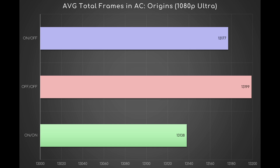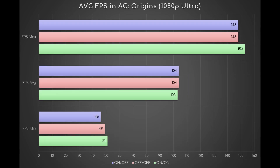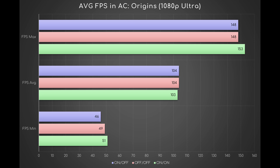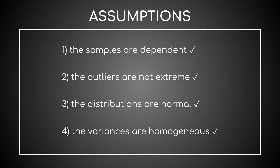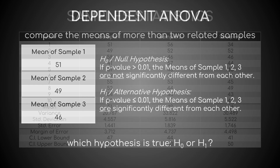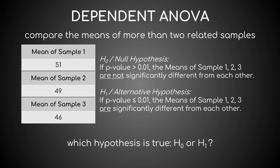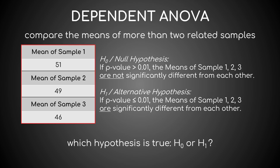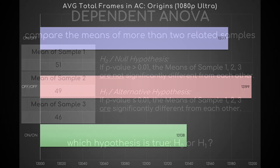One way to find out if these differences in total frames and mean FPS are statistically significant is the usual ANOVA. I've excluded the max and average FPS from it, because the former are of no interest and the latter are 103 versus 104 — I've said enough. So let's perform the ANOVA on the minimum FPS first. Assumptions check, descriptive statistics check, null and alternative hypothesis check. Our studio returns a p-value of 0.188, so H0 is accepted — the difference between these averages is not statistically significant.